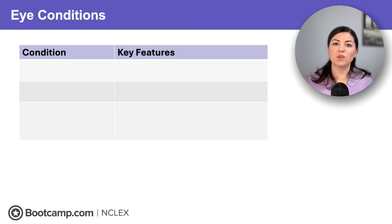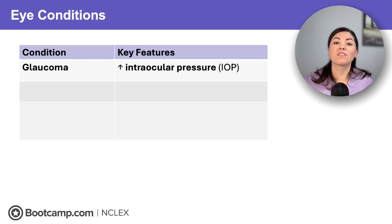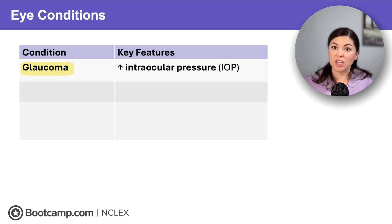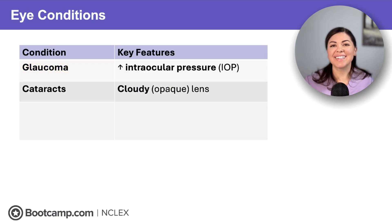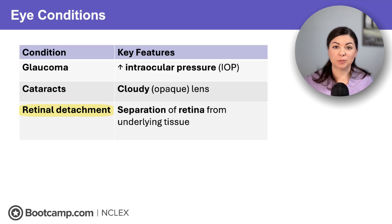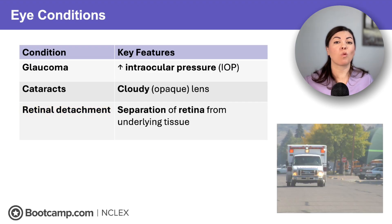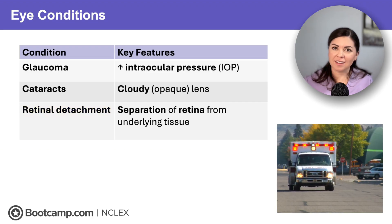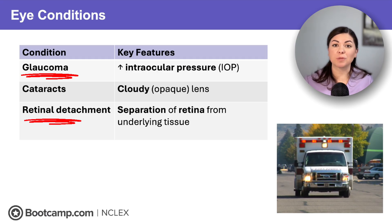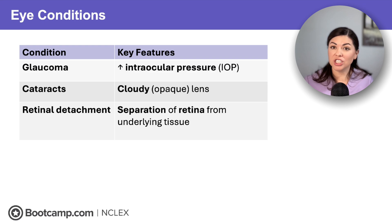So now let's briefly review the eye problems that cause visual loss that you are most likely to see on NCLEX. First, we have glaucoma, which is all about increased intraocular pressure that can damage the optic nerve. Remember, there are two types: chronic and acute. Next is cataracts, which causes a cloudy or opaque lens to develop slowly over time — think of it like the lens fogging up. And finally, retinal detachment, where the retina peels away from the back of the eye. Remember for NCLEX, acute glaucoma and retinal detachment are emergencies that cause permanent vision loss if left untreated.